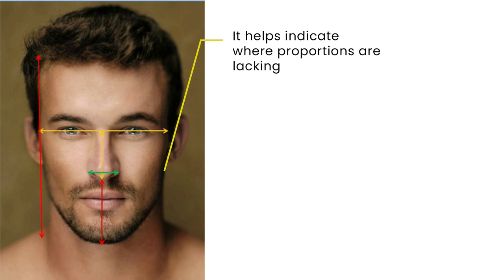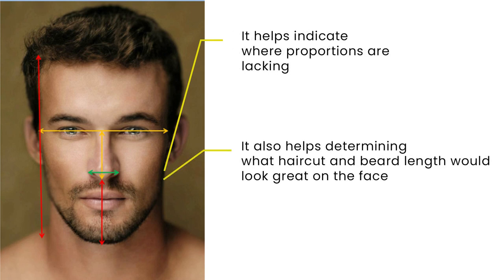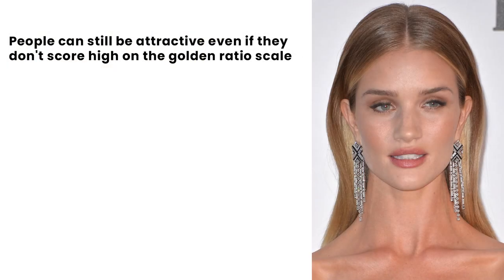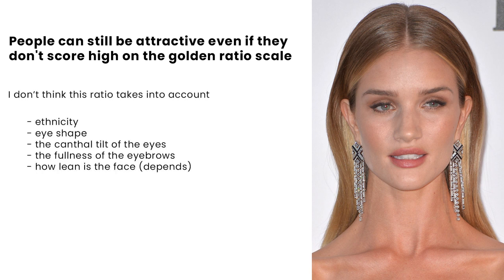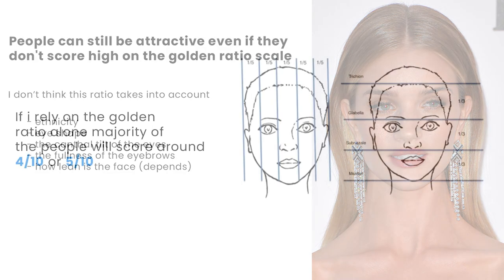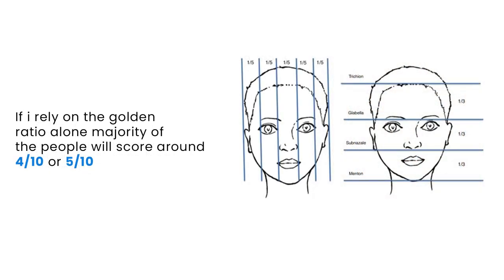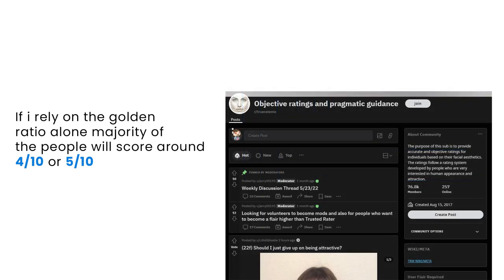I do use some aspects of the golden ratio to calculate the proportions of my clients' faces, to give accurate advice on what haircut to go for and what facial hair to grow, to add proportions back to the face. But I noticed something — there are some faces that do not score high on the golden ratio but are still considered highly attractive. I don't think the golden ratio takes into account a person's ethnicity, eye shape, the canthal tilt of the eyes, the fullness of the eyebrows, how lean the face is, or whether it has hollow cheekbones. If I just used the golden ratio to rate faces, I'd be handing out fours and fives constantly, and I'd end up like my worst enemy — the true rate me subreddit. Gives me shivers every time.